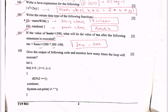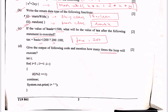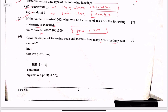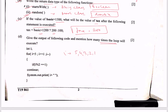Part D: give the output of the following code and mention how many times the loop will execute. int i starts at 5, condition is i >= 1, and i--. Inside the loop: if i % 2 == 1, continue. There is no condition where the loop breaks, so i takes values 5, 4, 3, 2, and 1.